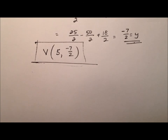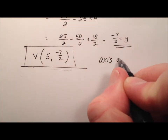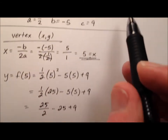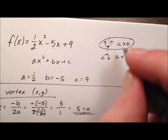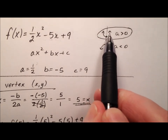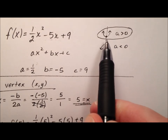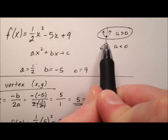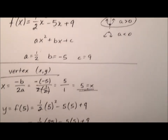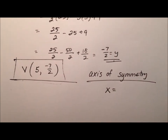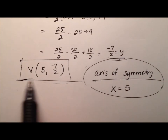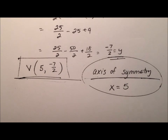Let's discuss the axis of symmetry. The axis of symmetry is a vertical line that passes through the vertex, setting up symmetry between the two legs of the parabola. It's always a vertical line x = [x-coordinate of the vertex]. So our axis of symmetry is x = 5.